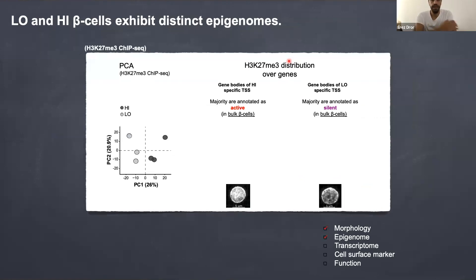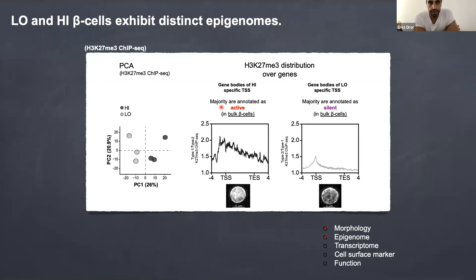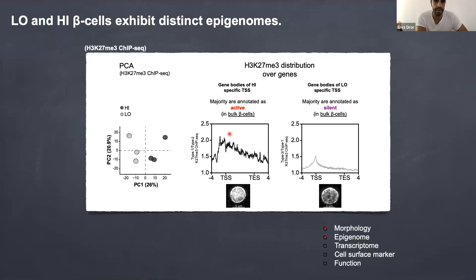So what are these differences? The differences are in the different compartments of what we believed to be either active or silent in the whole islet. The gene bodies of the high cells were majority annotated as active, and the gene bodies specifically in the low cells were what we knew to be silent. In other words, we have silencing of what we thought are silent when we looked at the bulk population — represented by the majority of cells that are the low cells. It's also about how broad these peaks were: the peaks of beta high, in agreement with the higher levels we see by FACS, are broader.